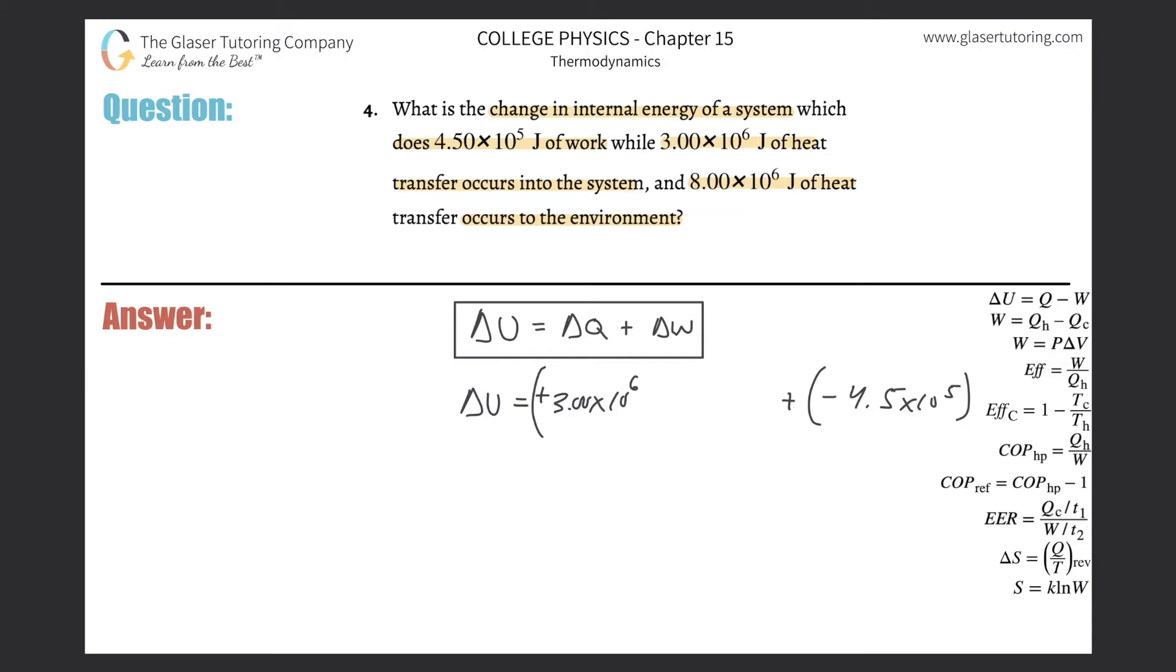And then it says also 8 times 10 to the 6 joules of heat transfer occurs to the environment. Think about that. Remember, I said if I want to find the internal energy change of a system, I need to know the change in heat energy of the system plus the work energy change of the system. So when it says that heat transfer occurs to the environment, that means the system has to be losing energy. How's the environment gaining energy? Well, it's coming from the system. So the system's losing energy.